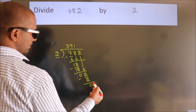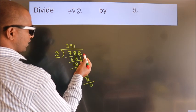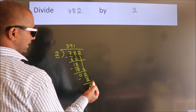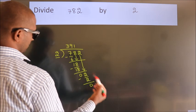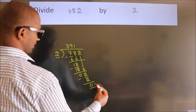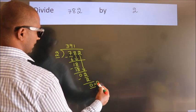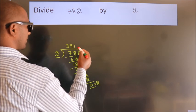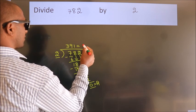After this, there are no more numbers to bring down, so we stop here. This is our remainder. This is our quotient.